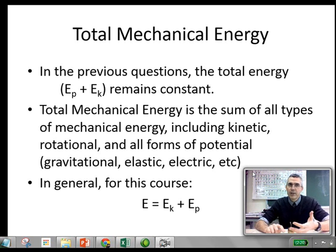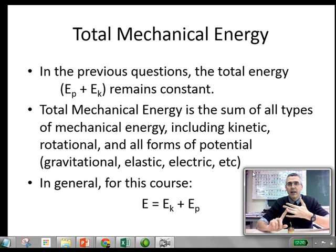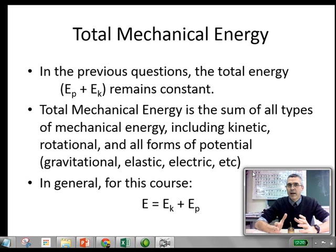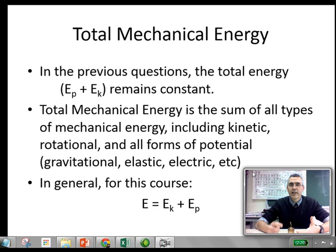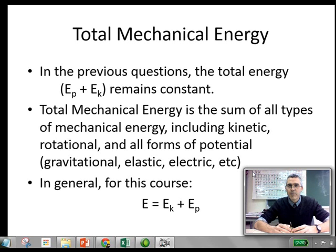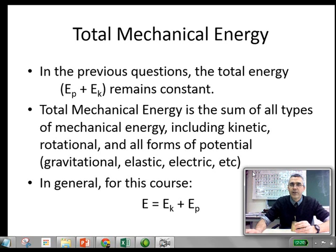Total mechanical energy can include kinetic energy, rotational energy, potential energy — gravitational, elastic — electric energy, and so on. Typically in introductory mechanics courses, we're looking at the combination of kinetic energy and potential energy. So the total mechanical energy of an object or a system is the sum of its kinetic energy and its potential energy.